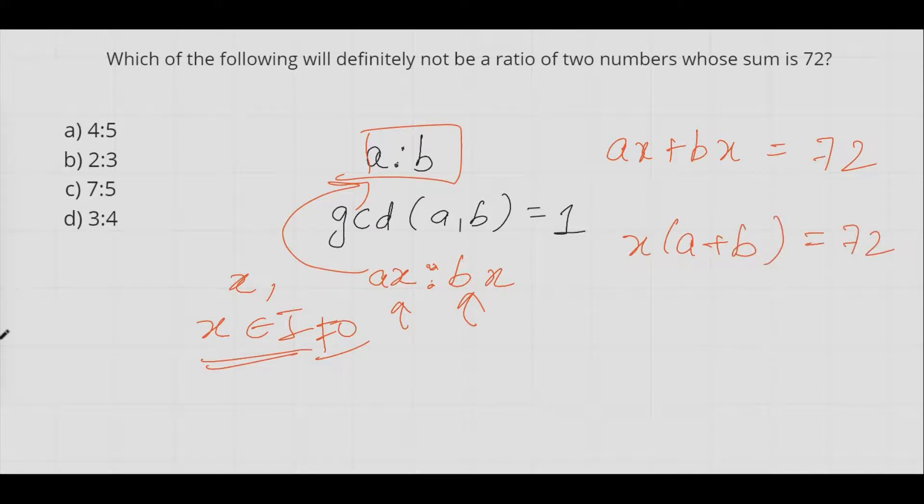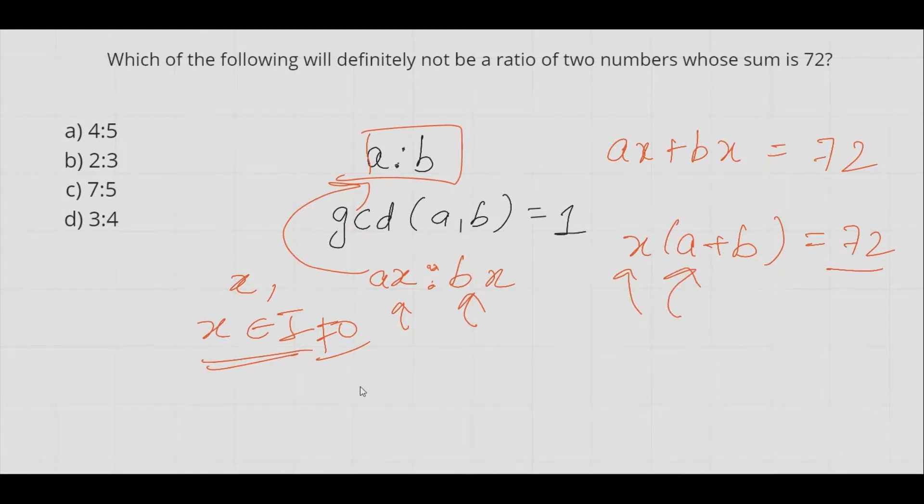We don't know anything about x but we know both a and b, so we definitely know their sum.